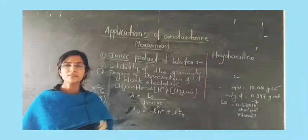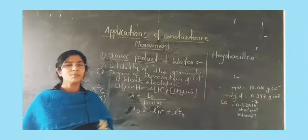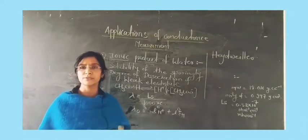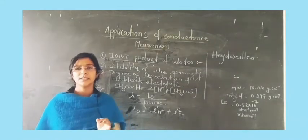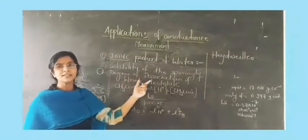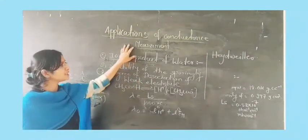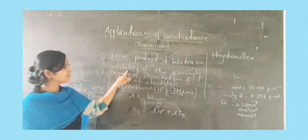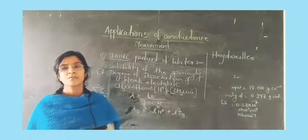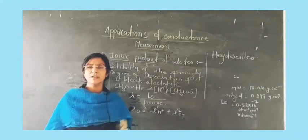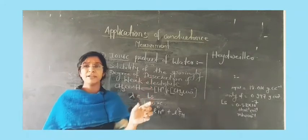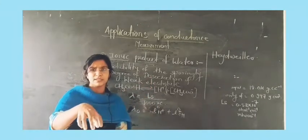Today's lecture covered three topics. The first is the ionic product of water, where a number of standard values are used — always remember that each value is standard. The second is solubility of sparingly soluble salts, where conductance measurement allows us to find solubility. The third is degree of dissociation. In SYBSC, we had already solved numericals based on the relations KW, Kb, and Ka, where the alpha value was directly given.